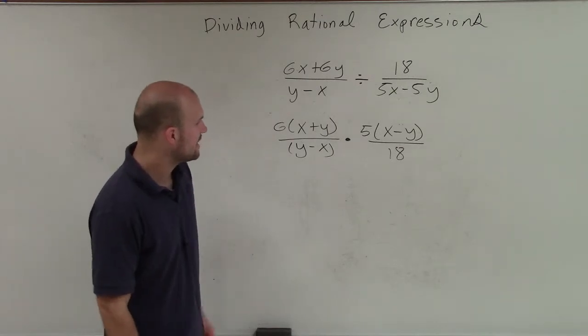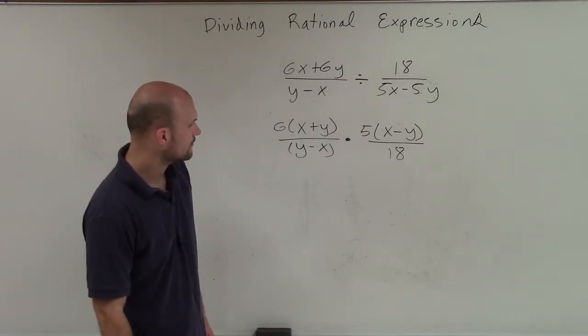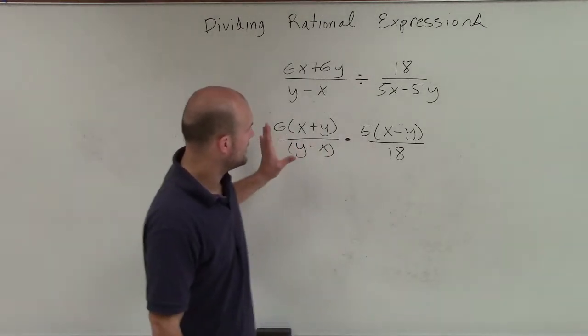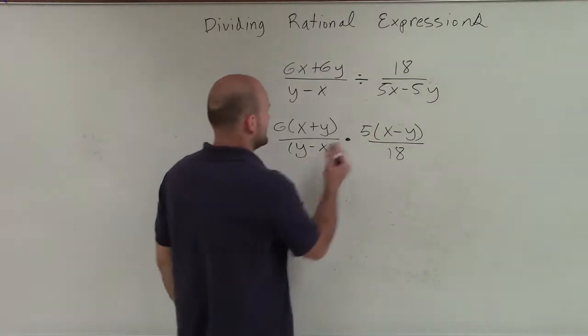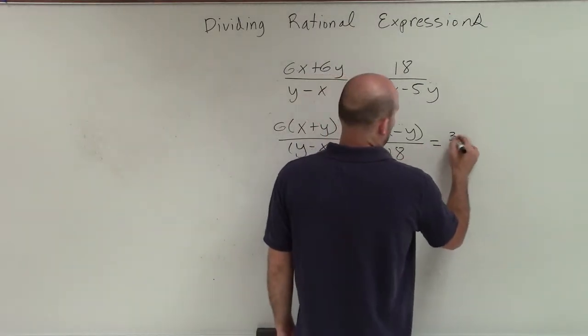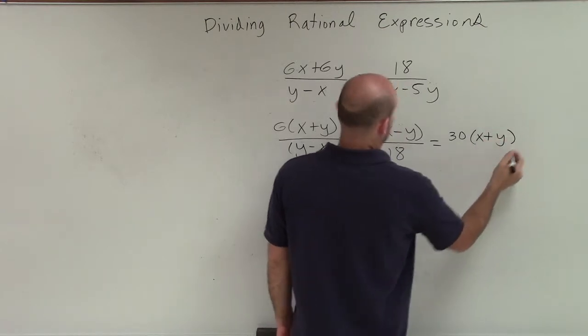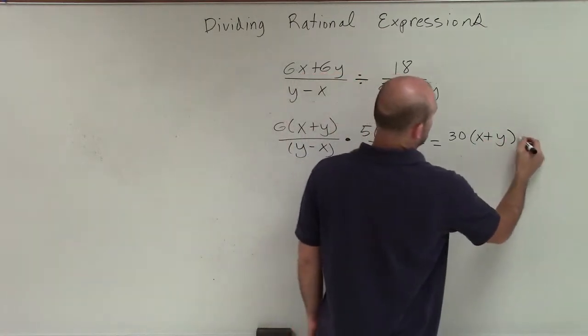So now, when we're looking at this, we see, let's go ahead and multiply cross and see what we get. So therefore, I have 30 over (x + y), (y - x).